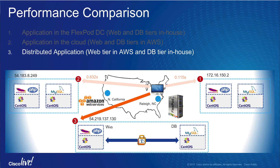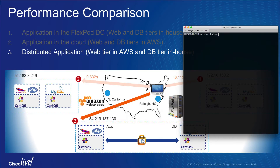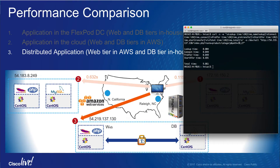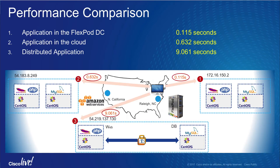Our third and final deployment instance results in a web server deployed on the West Coast and a database server on the East Coast. These two VMs communicate with each other over an IPSec tunnel. Because of the back-and-forth communication between application tiers across the continent, the distributed application results in a very high total time of around 9 seconds to download the web page. Looking at the web page load times, it is fairly obvious that in distributed deployments, application tiers should be geographically closer to each other and communicate over a low-latency link.